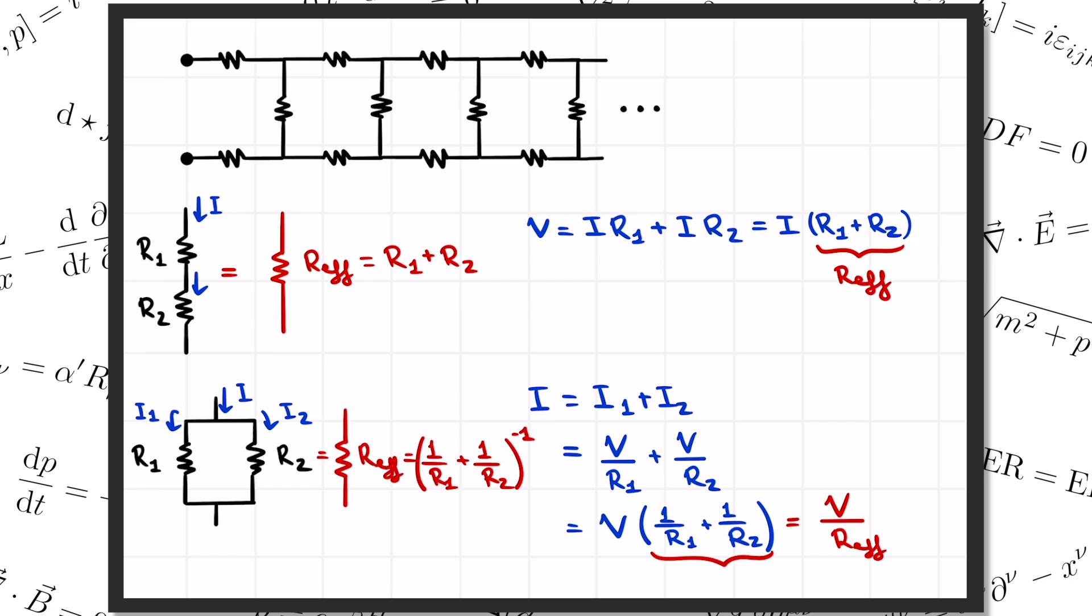Notice that for identical resistors, when R1 equals R2 equals R, if they're in series we get an effective resistance of 2R, and if they're in parallel we get R over 2. So the effective resistance of two resistors in parallel is smaller than the original resistors, while in series it gets larger.